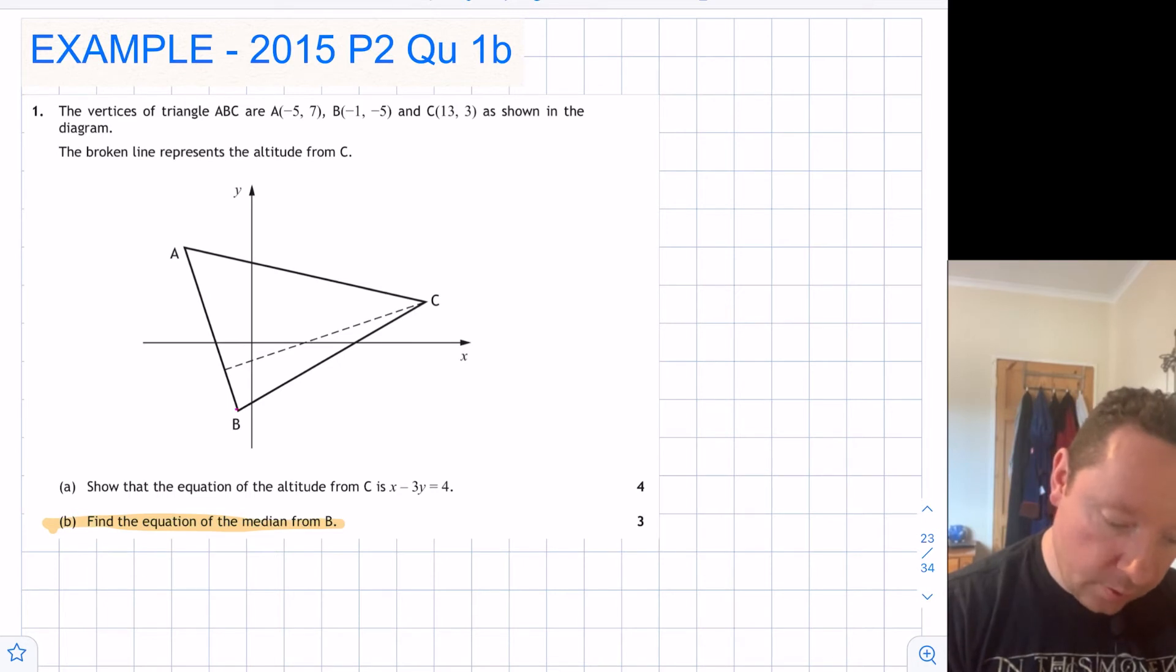So just looking at this part of the question here: find the equation of the median from B. So there's my B here. It's not got a line so I'm just going to draw one in. It's asking me to find the equation of this line that cuts this in half. So let's just call that M again.